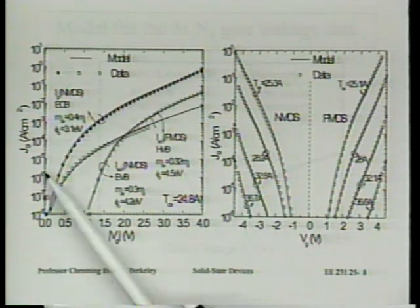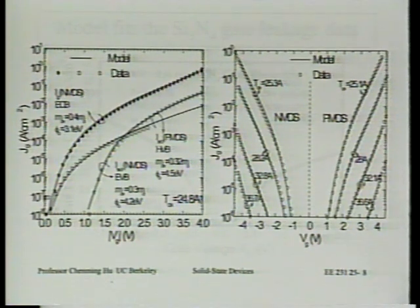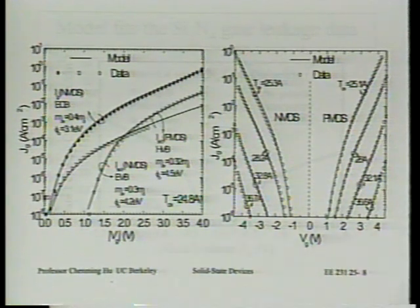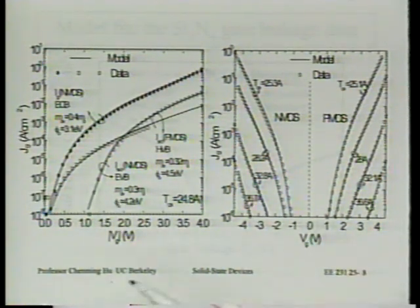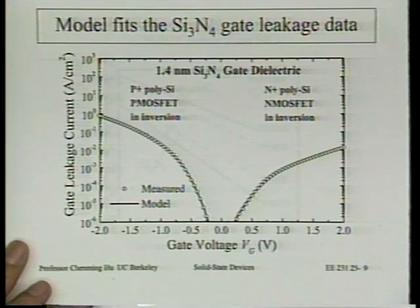Work functions measured in vacuum — as found in literature — differ from work functions in contact with dielectrics. They vary depending on what dielectric is used and on the deposition process, and they shift with annealing. So finding a metal with exactly the right work function for PMOS is genuinely difficult. This is an active research area. Any other questions about the new gate stack?